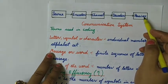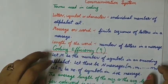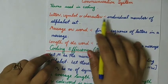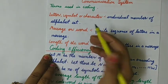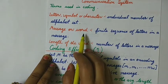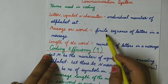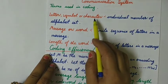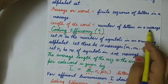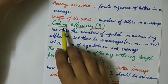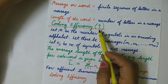The terms used in coding should be known. A letter, symbol, or character represents an individual member of the alphabet set from which messages are formed. A message or word is made up by combining letters, symbols, or characters — it is a finite sequence of such symbols. The length of a word represents the number of letters present in a message.